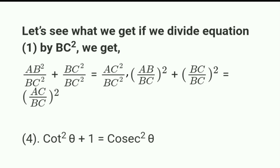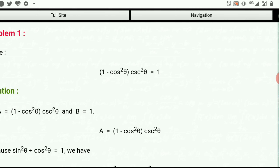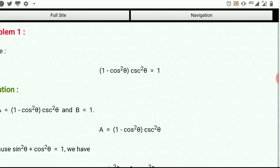Summary of the three identities: first, sin²θ + cos²θ = 1; second, 1 + cot²θ = cosec²θ; third, tan²θ + 1 = sec²θ. These identities are very important and we are going to use them to solve numerical problems. Let's see some examples.